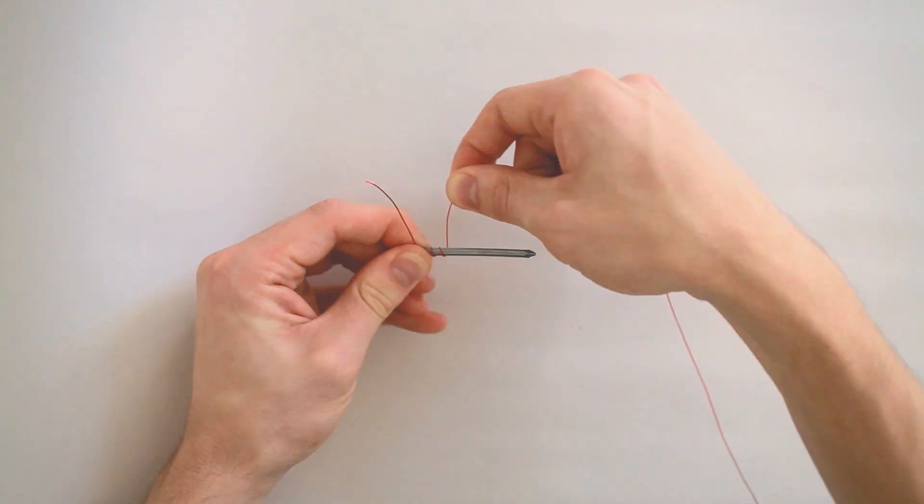Step one, take your large iron nail and your wire, wrap it around the nail at least 20 times.